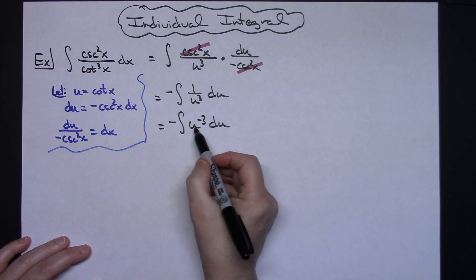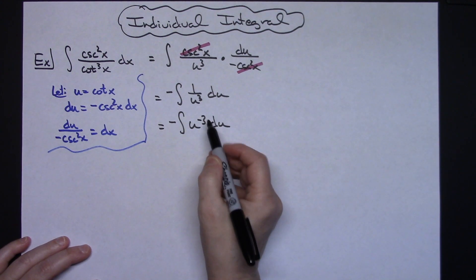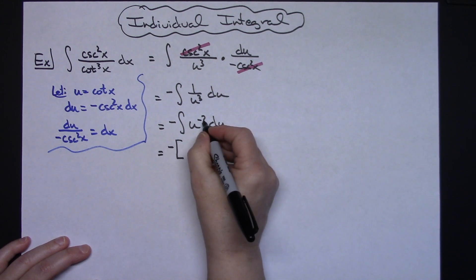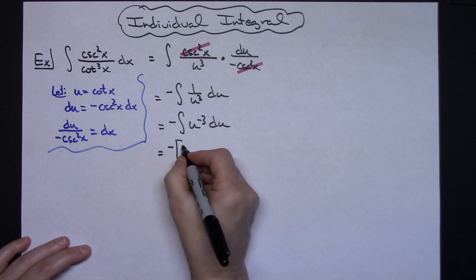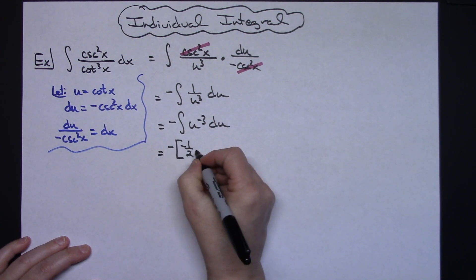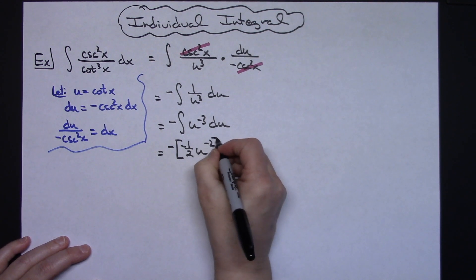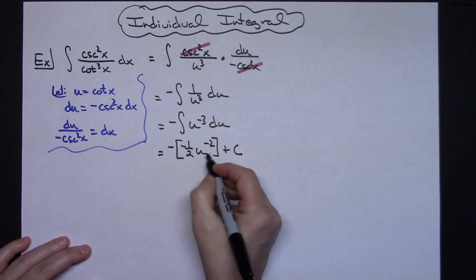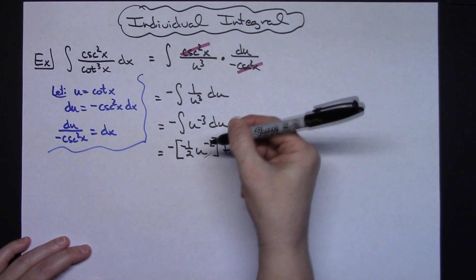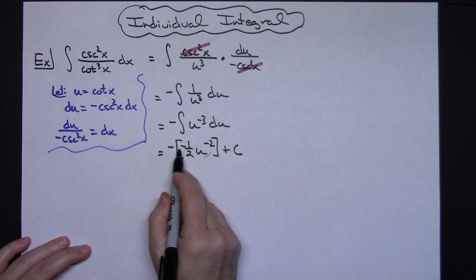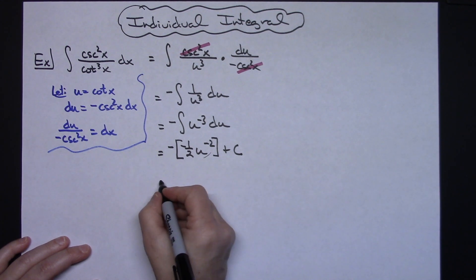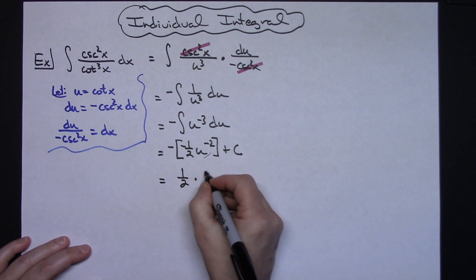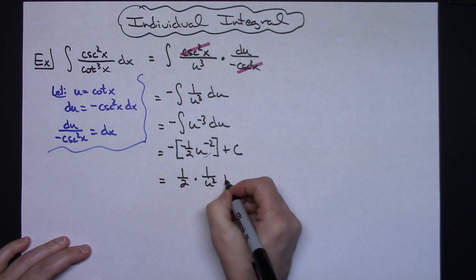This is a straightforward integration here. Adding 1 is going to give me a negative 2 there. So I'll have a negative that's on the outside, negative 2 here, reciprocal will give me the negative 1 half on top, u to the negative 2, and then I can do plus c. At this point I'm going to choose to move this u to the negative 2 down and I'm going to take care of these two negatives. Negative times negative is going to give me a positive. So then I'm going to have a 1 half times a 1 over u squared plus c.